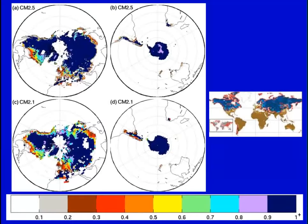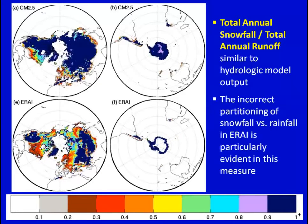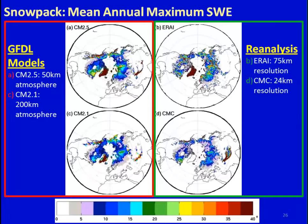Comparing to the original hydrologic model output — total annual snowfall divided by total annual runoff — the CM2.5 model output looks quite good, with most of North America and Eurasia showing runoff dominated by snow, matching nicely with the observed hydrologic model. ERA Interim, however, significantly loses that strength over Eurasia and parts of North America. ERA Interim was helpful for showing that relative maximums were in the same locations, but not reliable for understanding the correct magnitude. We therefore turn to another reanalysis product — the Canadian Meteorological Center — for snowpack measurement.